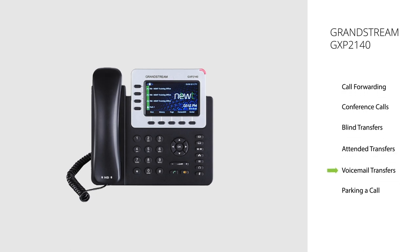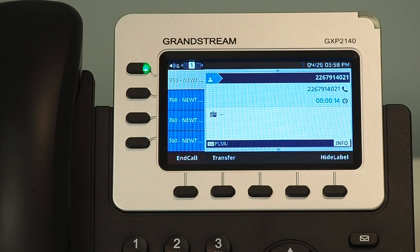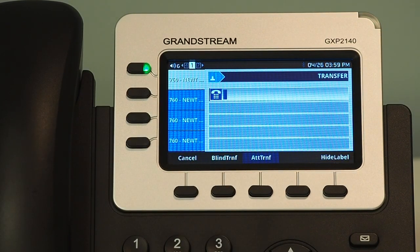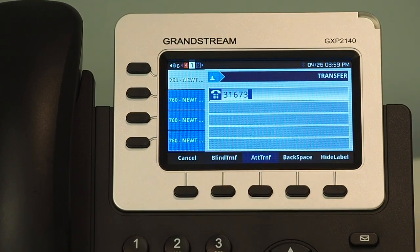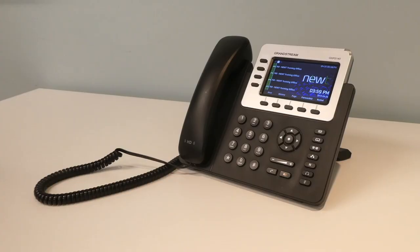Voicemail transfer. A voicemail transfer will allow you to transfer a caller directly into an internal extension's voicemail. In this instance, the recipient's handset will not ring — the caller will be placed directly into the voicemail of the extension to leave a message. During an active call, using the soft key below the screen, select the Transfer soft key. This will put your current caller on hold and provide you with a dial tone. Dial 3-1 plus the extension number of the recipient, then press the Blind Transfer soft key to complete the transfer. Once your main screen returns, the transfer is complete.